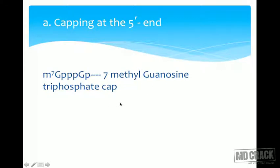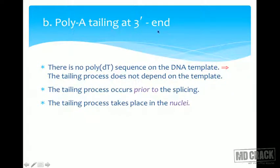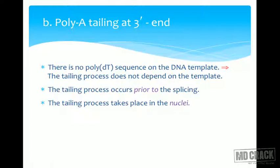Capping at the five prime end is by the 7-methylguanosine triphosphate cap. The five prime cap structure is found on both hnRNA and mRNA, showing that capping occurs in the nucleus and not in the cytoplasm. The cap structure is recognized by a cap-binding protein, and only then can translation take place. Capping occurs prior to splicing. For poly-A tailing, the DNA did not contain poly-dT, so the tailing process does not depend on the template. Tailing also occurs prior to splicing and in the nucleus.